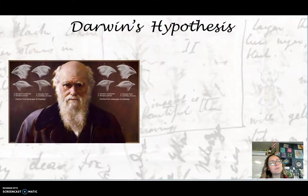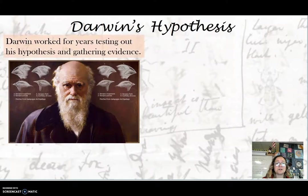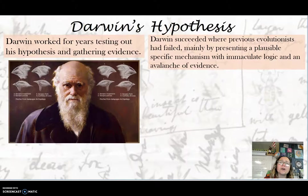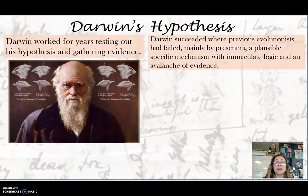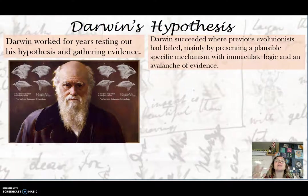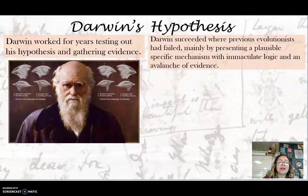Darwin went back to England after five years on the HMS Beagle and spent years doing research, testing out his hypothesis, and gathering evidence. He worked with pigeons, with worms, and did breeding experiments and artificial selection. How Darwin is different from Lamarck is that he was able to present a plausible, specific mechanism with immaculate logic and an avalanche of evidence. He spent years studying natural selection before he came out and presented his hypothesis.